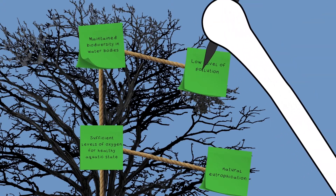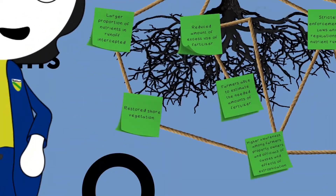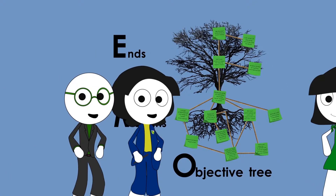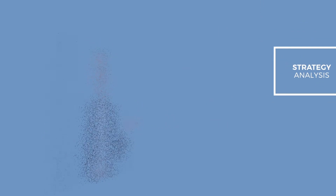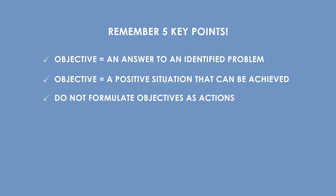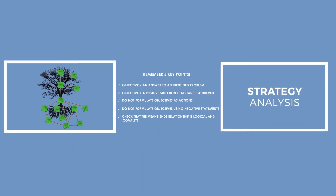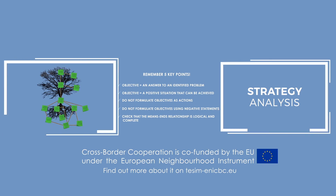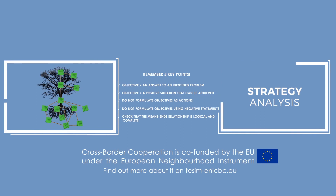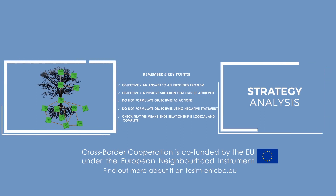Our partners consolidate the analysis carried out at the stage of problem analysis and add a number of objectives that are also relevant for aquatic quality and biodiversity. With a good understanding of the problems, the roles of the stakeholders, and this full overview of the potential objectives visually represented in the objective tree, our partners now have a sound basis to determine their project strategy. Have a look here for more details on the objective tree, and let's now watch the next video on strategy analysis.